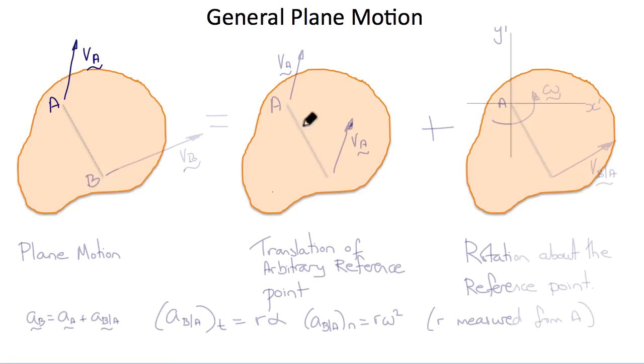So considering this a little bit further, if A has velocity V_A and B has velocity V_B, that can be decomposed into the sum of the translation where A and B both translate with a velocity of V_A.